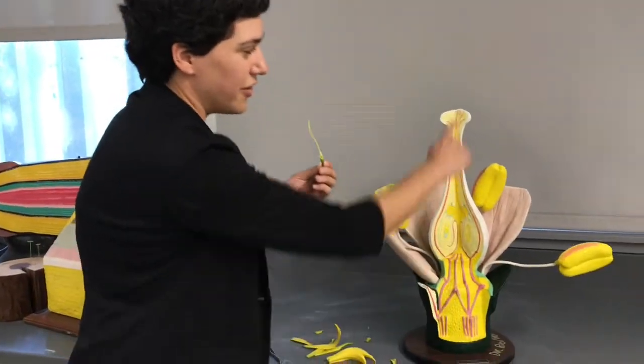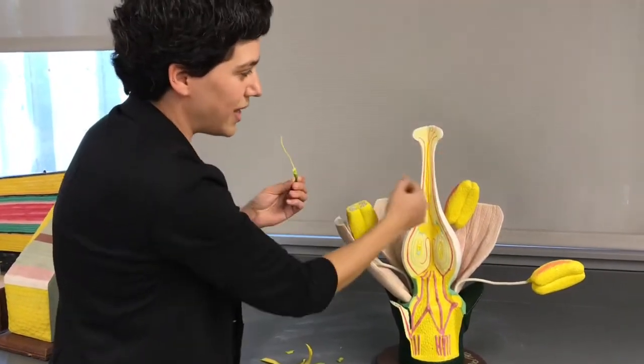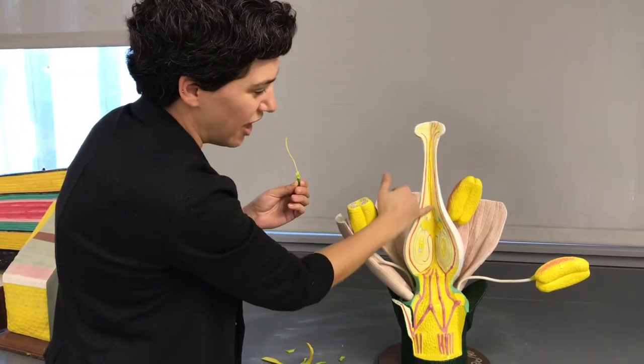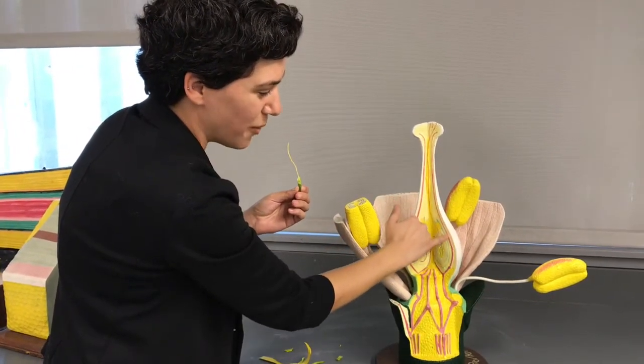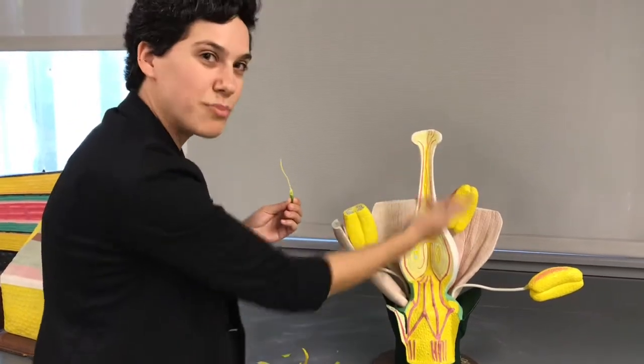Here on this model, this is the stigma. And we actually have drawings of pollen tubes growing down the style of the carpel on this model.